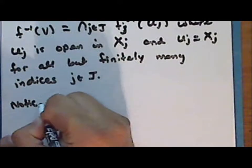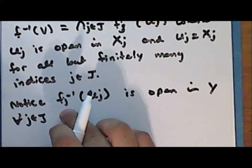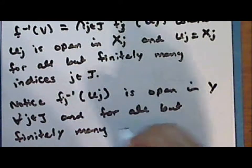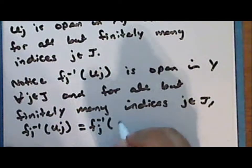Notice that the inverse image of u_j under the j-th coordinate map is open in Y for every index j, since each coordinate function f_j is continuous. In fact, for all but finitely many indices j, u_j equals the entire factor space x_j, so the inverse image of u_j is the inverse image of x_j under f_j, which is all of Y.